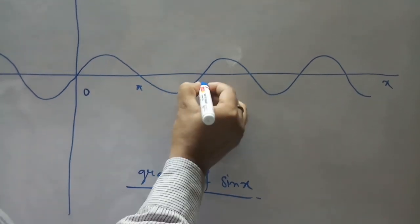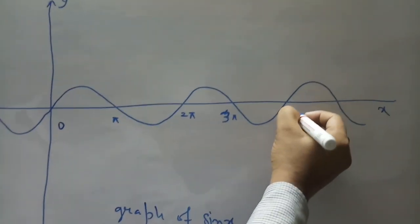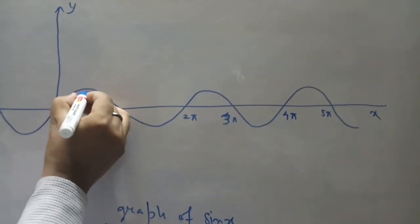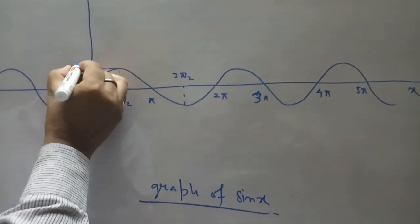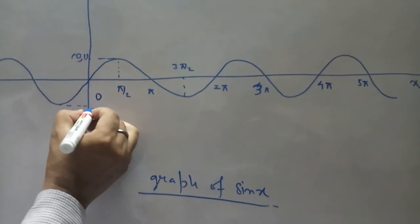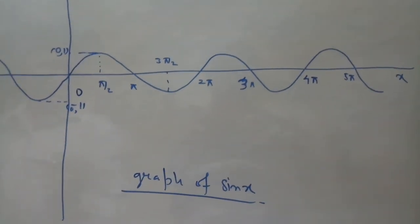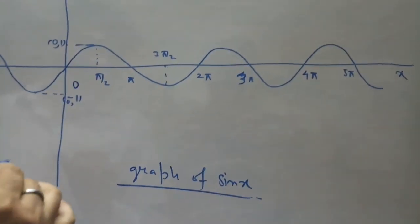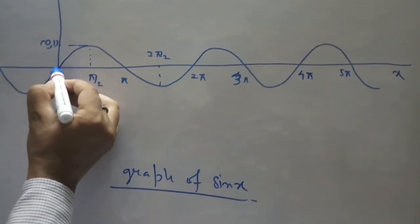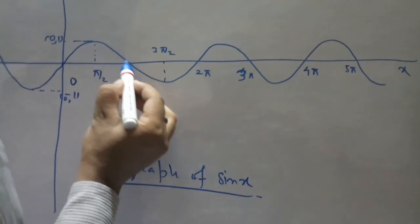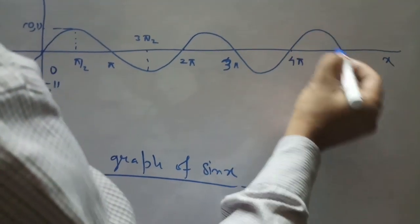We know this is the graph of sin x. The labeled points are: π, 2π, 3π, 4π, 5π on the x-axis; 3π/2; and the points (0, 1) and (0, −1). The graph of sin x increases from the point 0, then reduces, then further increases from the point 2π, then reduces again, then further increases from 4π, and so on.